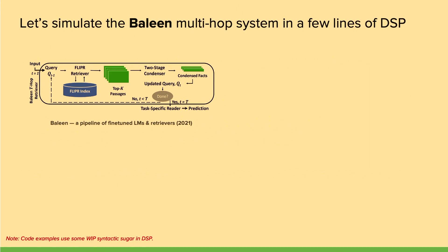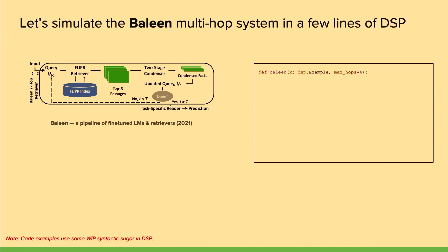As an example of how DSP works, we'll use the Baleen multi-hop question answering system, another system built at Stanford. It was very robust and accurate but took many months of design and implementation — and now we can replicate it in just a few lines of DSP code. The Baleen function takes a DSP example as input, introduces a context as a list of relevant passages, then iterates over four hops, where the first step in each hop is generating a search query.